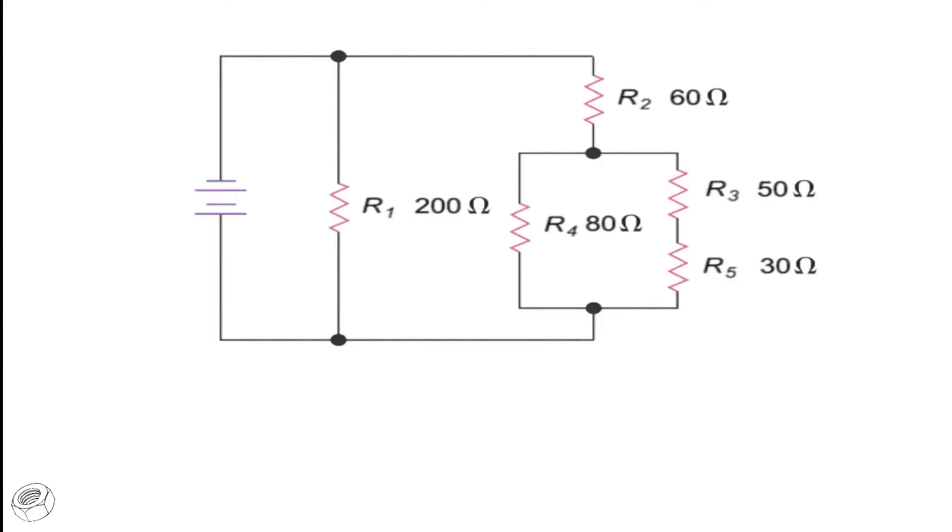Determining the resistance of a more complex series parallel circuit requires reducing the overall circuit and adding together all the combined resistance values. In this more complex series parallel circuit example, let's begin by combining the resistance of the two resistors farthest from the source, R3 and R5. Since these resistors are in series, we can simply add their values, 50 ohms plus 30 ohms, to get 80 ohms.